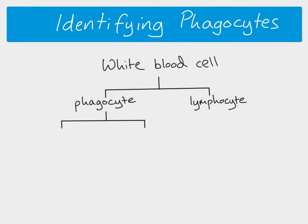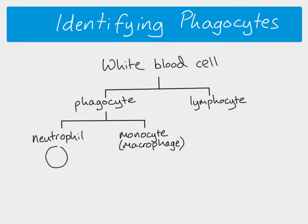With our phagocytes we can split them into two types of cell: we have neutrophils and we have monocytes, which then mature to become macrophages. A neutrophil has a lobed nucleus as its distinguishing feature. Macrophages are bigger than neutrophils and have a large nucleus which is not lobed. A lymphocyte is smaller, and its nucleus is very big — it takes up almost the whole cell.